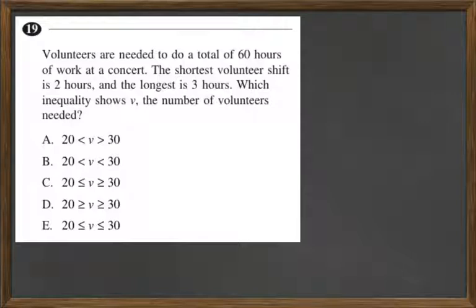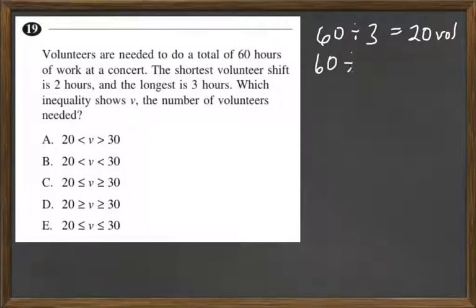Let's do the extremes here. Let's look at if everybody only did the maximum of 3 hours. We take 60 and divide it by 3 hours, and that equals 20 volunteers. So you need to have 20 or more at this point. And then let's say everyone did the minimum 2 hours, so we'd have 60 divided by 2, and that would equal 30 volunteers needed.